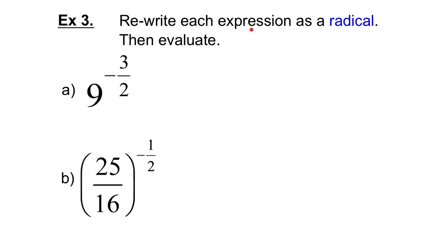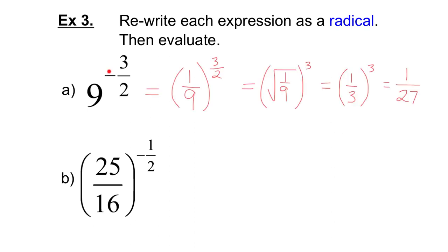So, I'd like you to rewrite each expression as a radical, then evaluate. In each case, you have a negative exponent. So, rewrite it as a positive exponent, then write it as a radical, then evaluate. Pause the video and try this question. For the first one, I take the reciprocal of the base, which is 1 over 9, and raise it to a positive exponent, 3 over 2. Because the denominator of the exponent is 2, that's the square root. The square root of 1 over 9 is 1 over 3. Cube that: 1 to the exponent 3 is 1, 3 to the exponent 3 is 27. So, my final answer is 1 over 27.